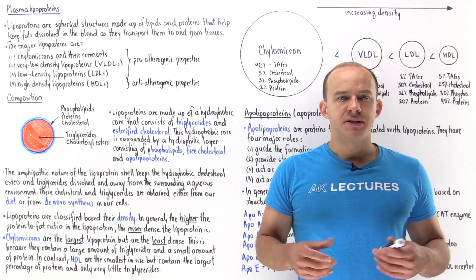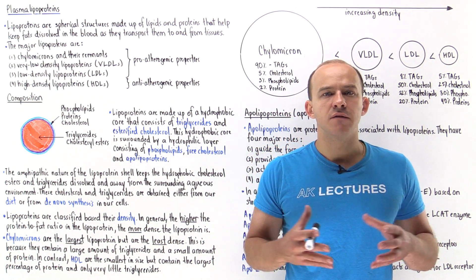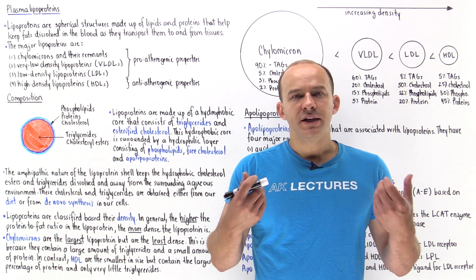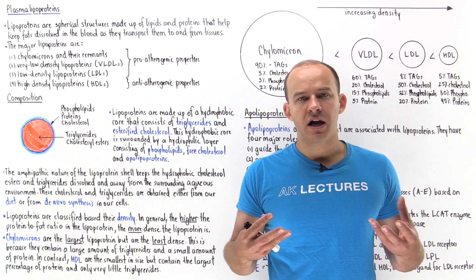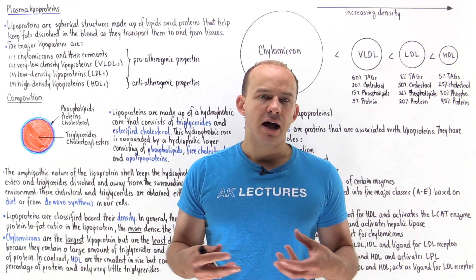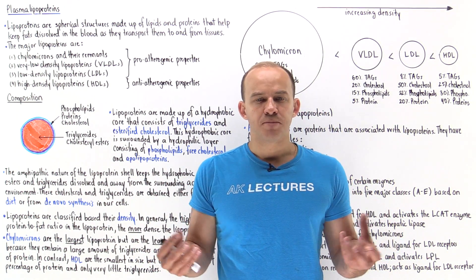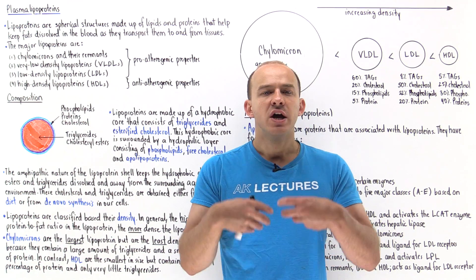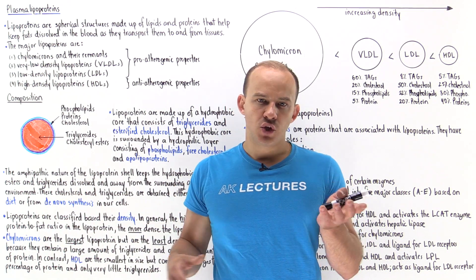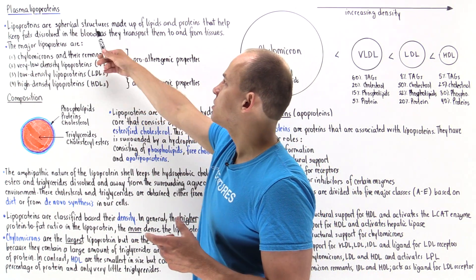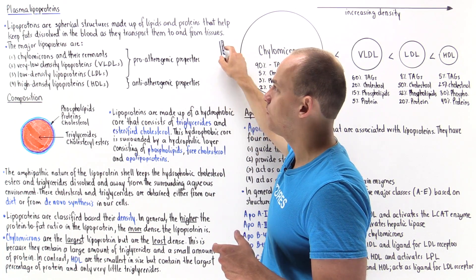The next topic we're going to talk about is the metabolism of lipoproteins. What exactly are lipoproteins and what is their function? When we ingest or synthesize molecules such as triglycerides and cholesterol, these molecules are very hydrophobic, which means they can't simply dissolve in the blood. To keep them dissolved in an aqueous environment and transport them throughout the bloodstream, we have to generate these lipoproteins — transport molecules that keep triglycerides and cholesterol dissolved and move them to and from tissues.